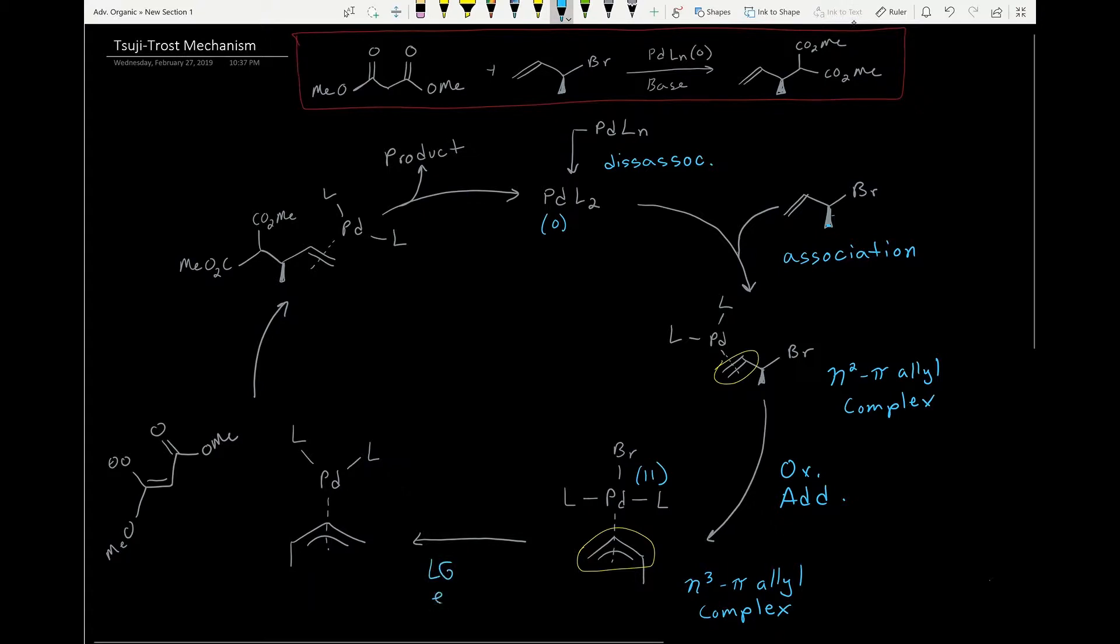Then our leaving group is expelled, so the bromine just leaves, which keeps this palladium at an oxidation state of two, but now it's got a positive charge associated with it.